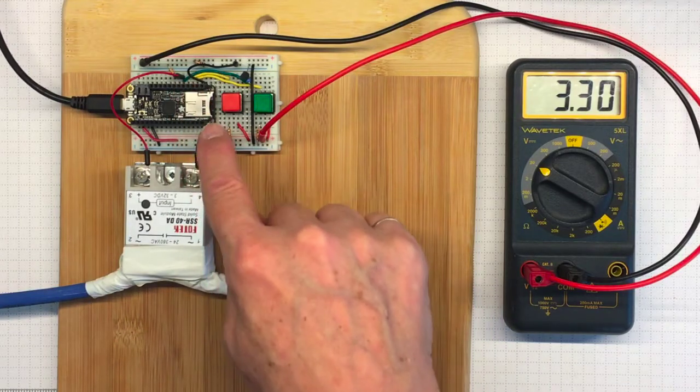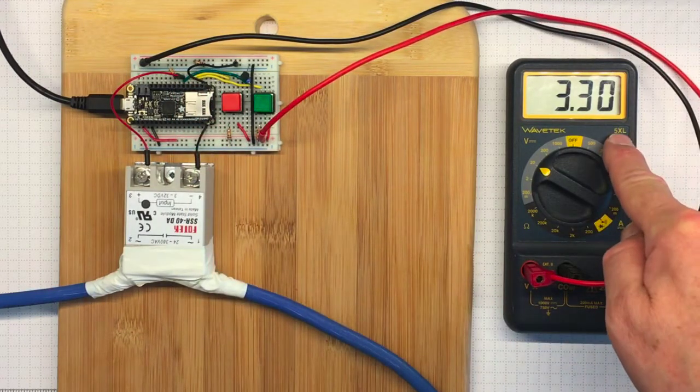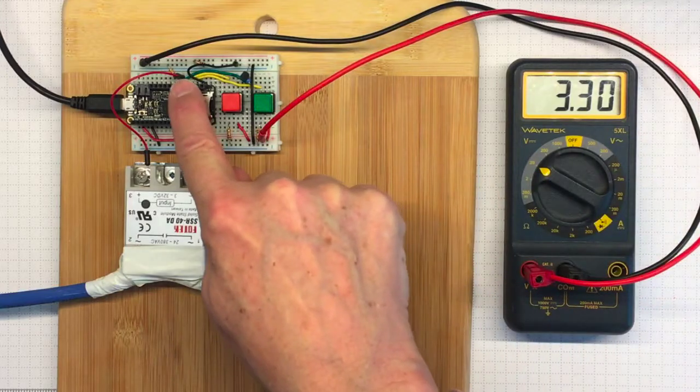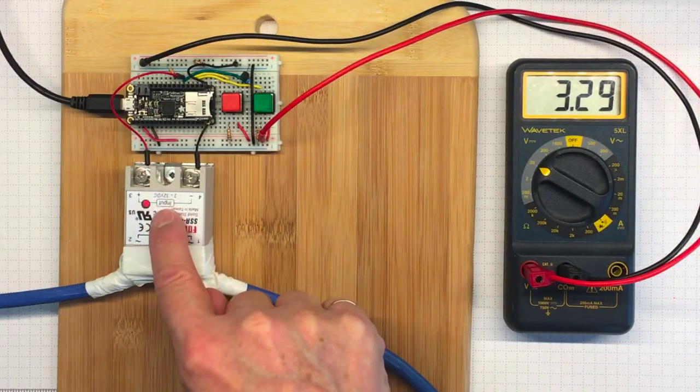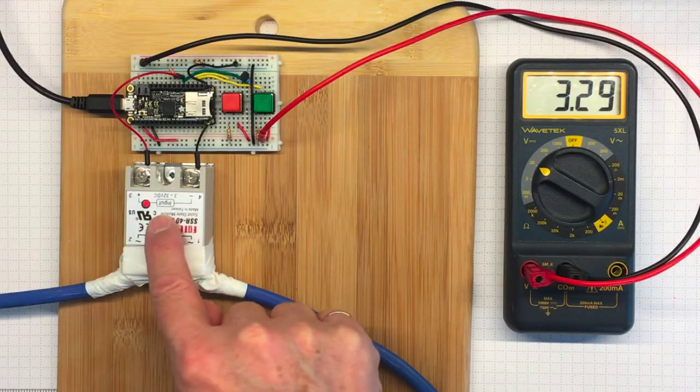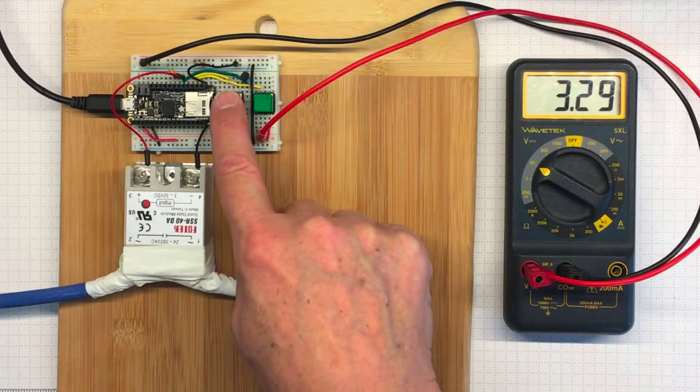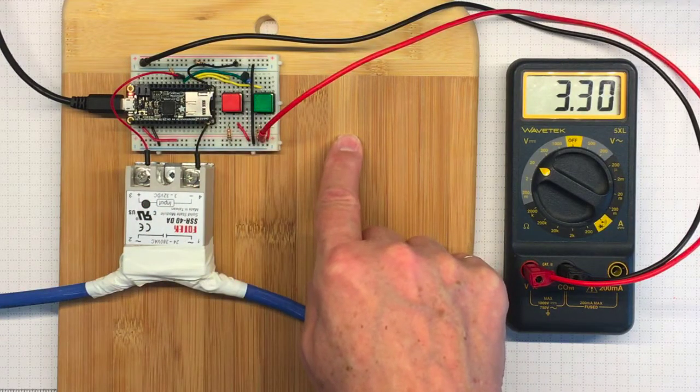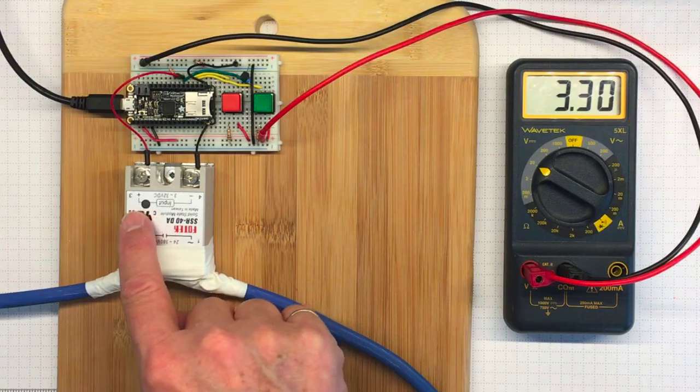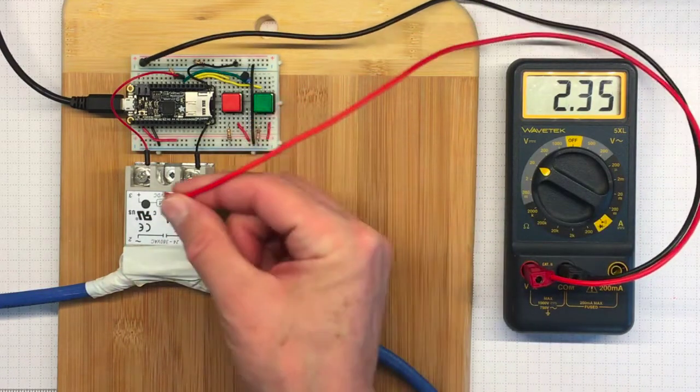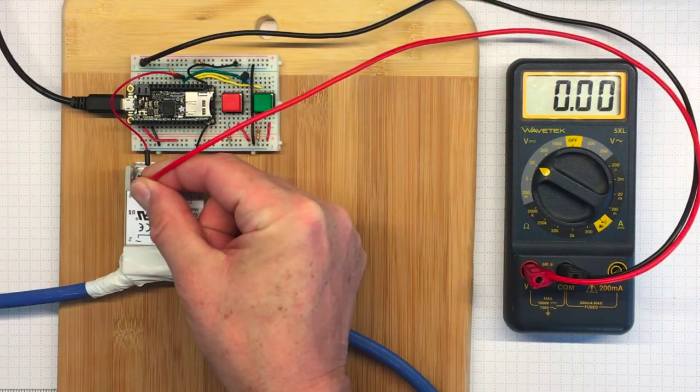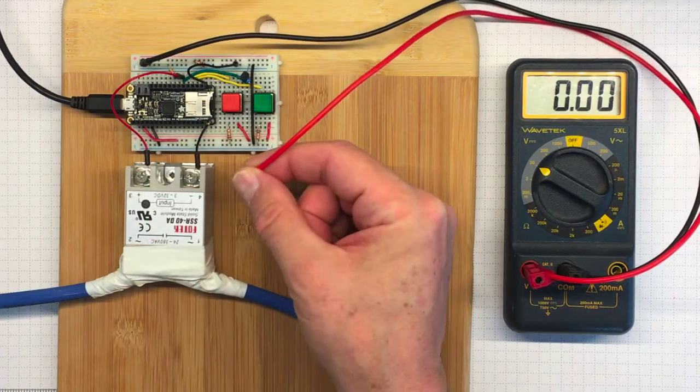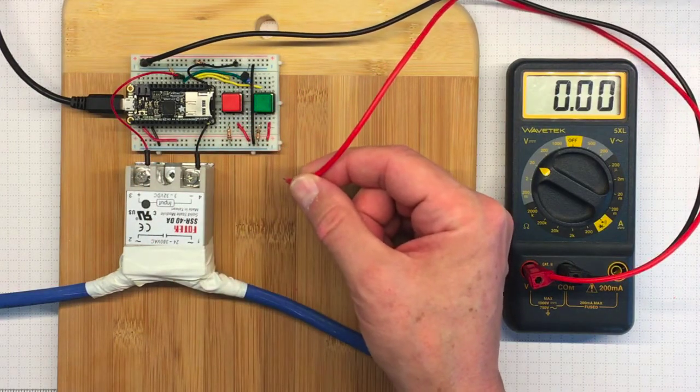And that's providing, this is a 3 volt microcontroller, so it's providing a 3 volt signal over here to turn the SSR on and off. So I push it briefly and it will stay off for a short period of time.